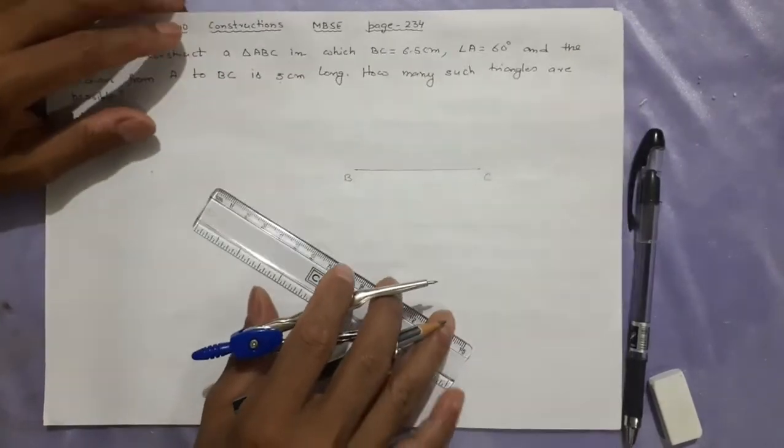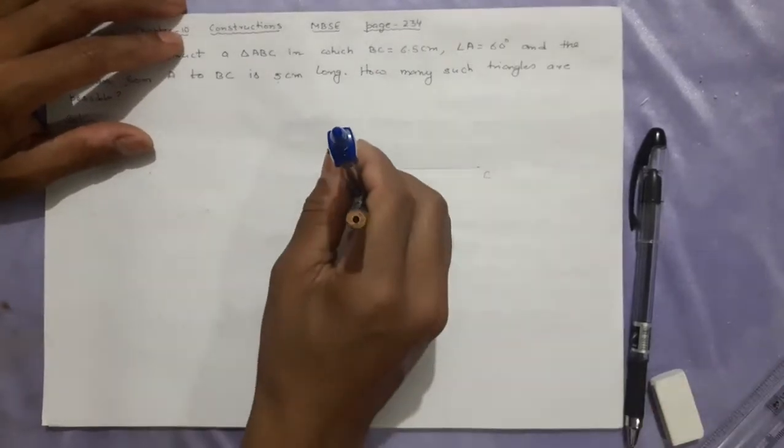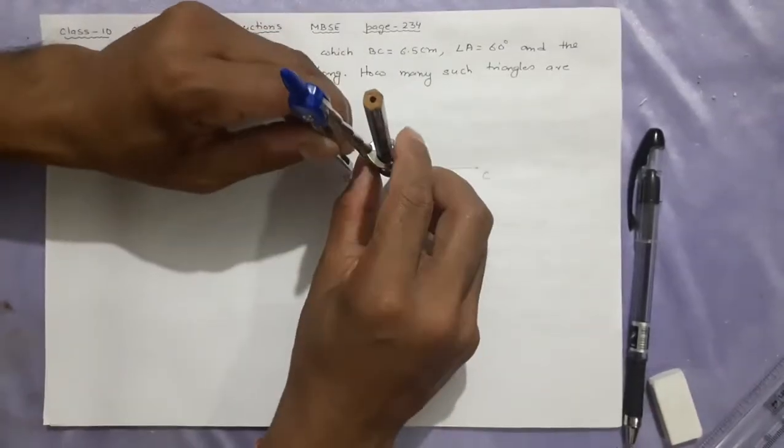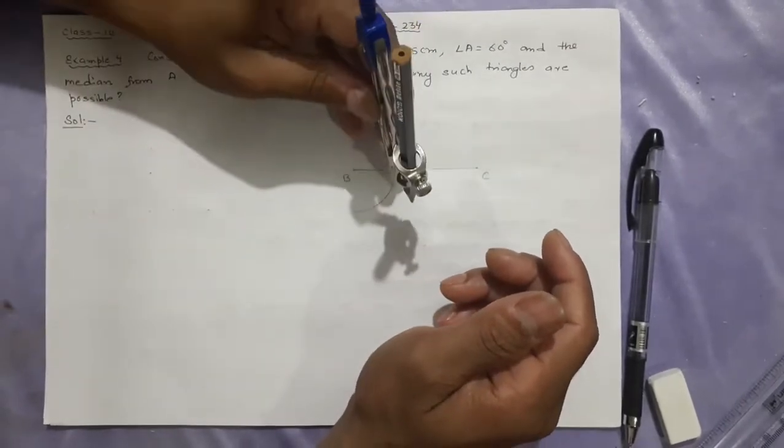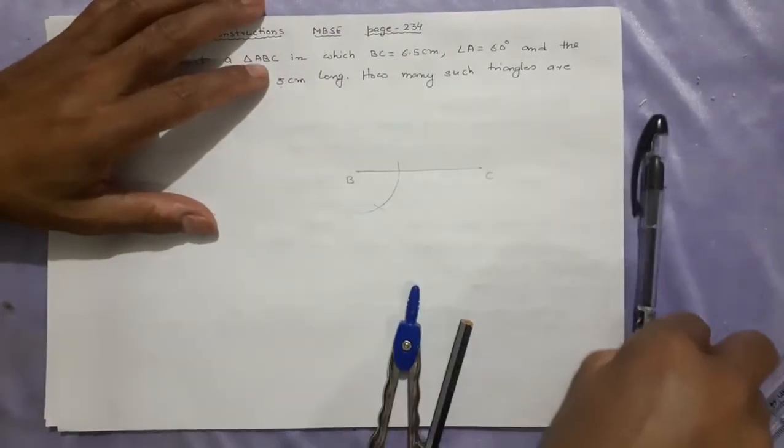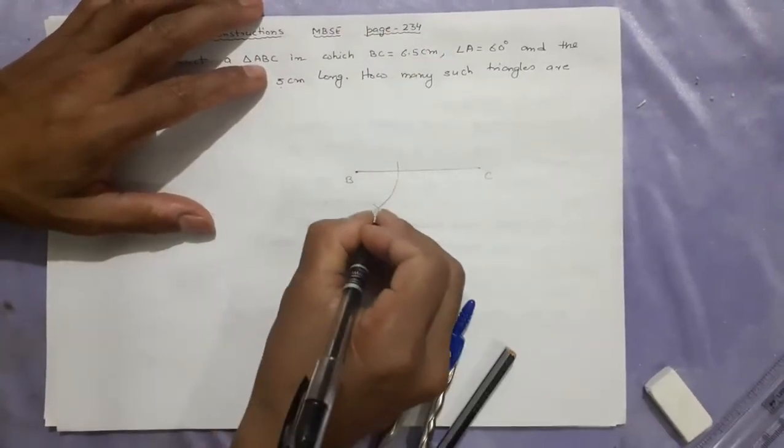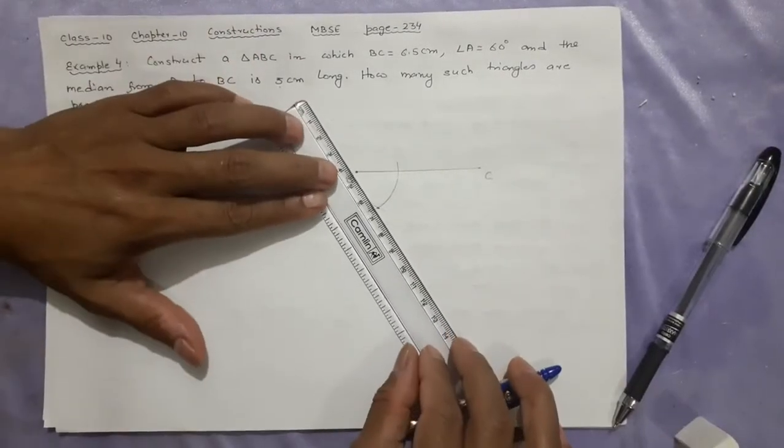After that, what we do, we take that angle 60 degrees, not this side but below side. This is the below angle. Done. Go here, cut it. So, pen I will show you more clearly here.